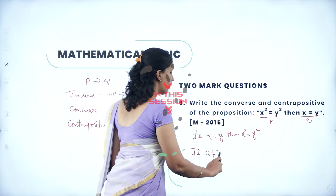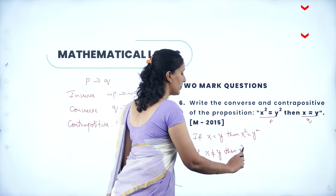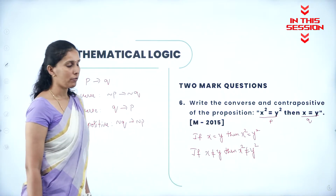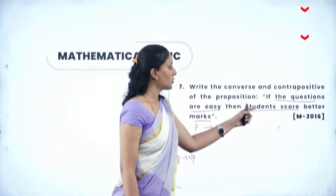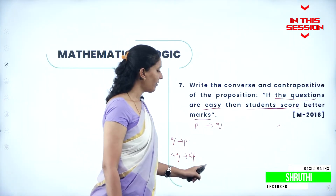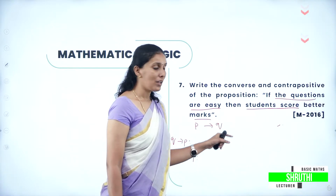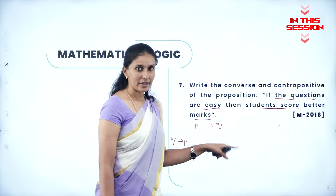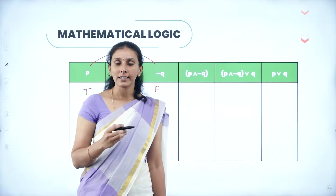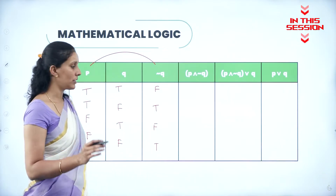If x is not equal to y, then x square is not equal to y square. So this is the contrapositive of the given statement. Students score better marks, but I have to write not Q. So therefore, if the students do not score better marks, then the questions are not easy. Conjunction means and. And statement is true when both the statements are true. In all the other cases, it is false.